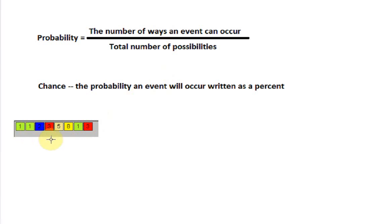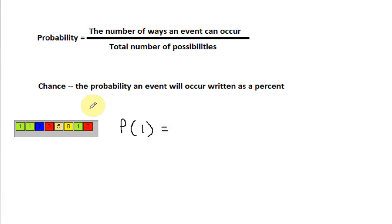Suppose we have these numbers in a box and we're going to draw them randomly from the box. We want to say: what is the probability that we draw a one? Well, the number of ways that the event can occur is three, because there are three ones in the box, and the total number of possibilities is eight — one, two, three, four, five, six, seven, eight. So the probability that we draw a one is three out of eight.